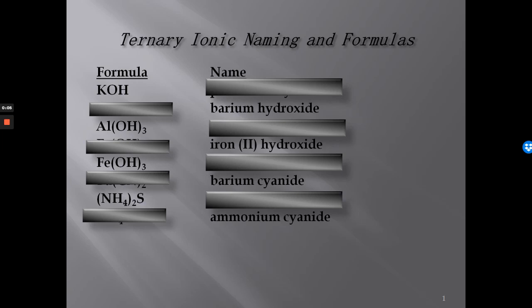Today we're going to talk about how to write the names and formulas of ternary ionic compounds. Ternary ionic compounds, or pseudo-binary ionic compounds, refer to compounds that contain three elements — for example, a metal and a polyatomic ion. You will need your periodic table and your polyatomic ion sheet. You can also pause and replay anytime during the video for your practice and review.